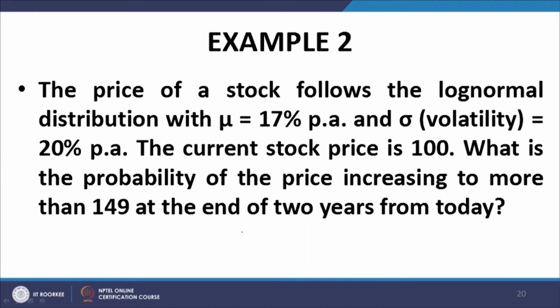Now let us do another example. The price of a stock follows the log normal distribution with mu of 17 percent per annum and volatility sigma of 20 percent per annum. The current stock price is 100. What is the probability of this price increasing to more than 149 at the end of 2 years from now? Since this is 2 years, there is no question of using the infinitesimal model — we have to use the log normal model, as 2 years is a substantially long period of time and certainly cannot be classified as infinitesimal.